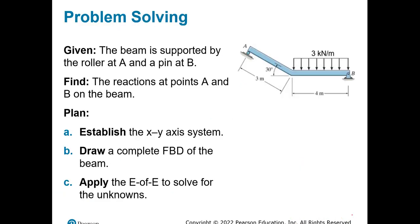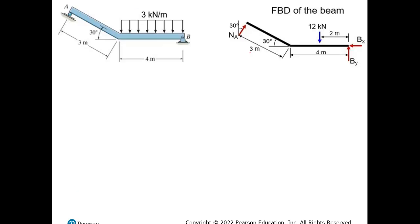Now a slightly harder example. A beam is supported by rollers at A and B. We need to find the reactions at A and B. Steps: establish X and Y coordinate system, draw the free body diagram, apply equations of equilibrium. Something very important from the end of chapter four: we learned how to convert distributed loads into single loads, and that's what happens here.